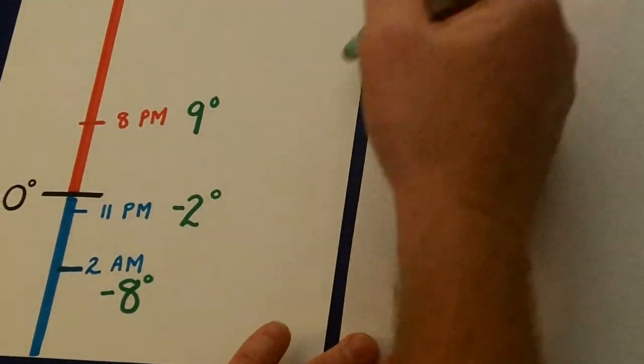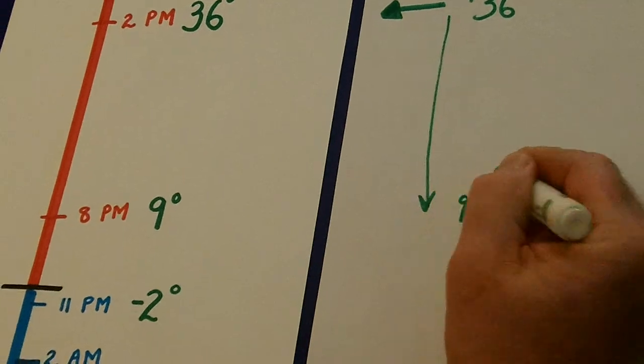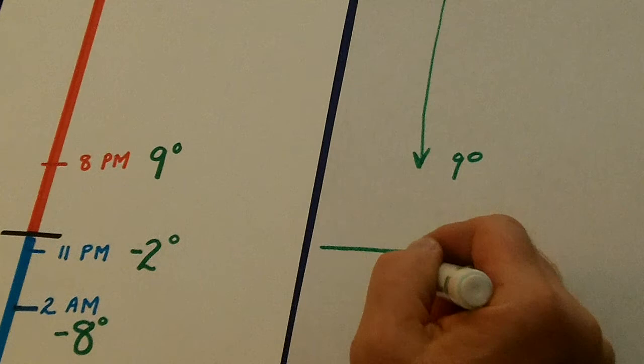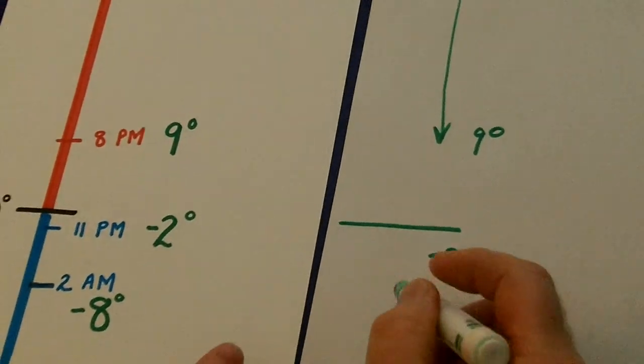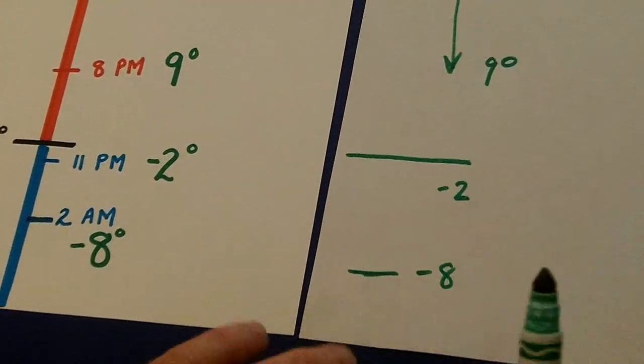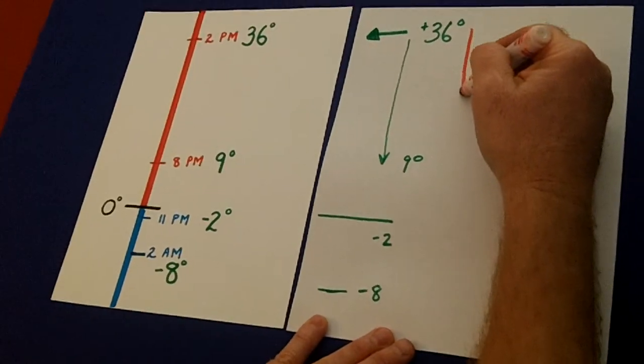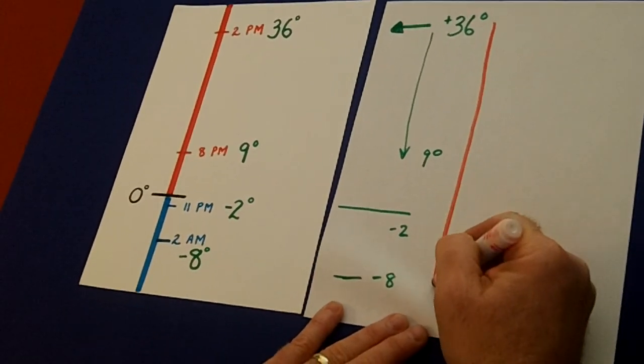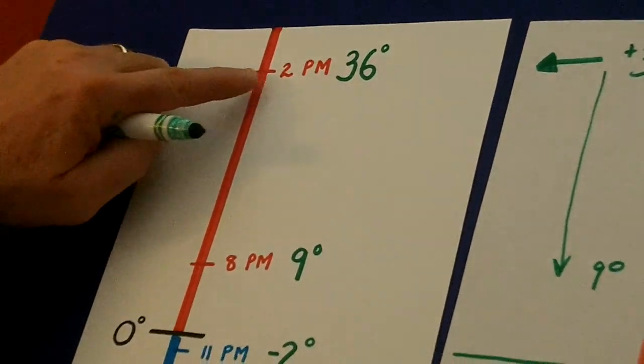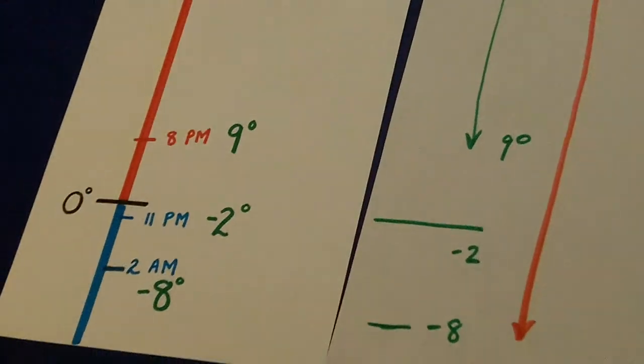Now by 8pm it plummets down to 9 degrees. By 11pm, it's below 0 and it's at negative 2. And then at its coldest point at 2am it's negative 8. Now usually this word problem is going to say, how much did the temperature decrease from 2pm in the afternoon to 2am its coldest point in the morning?